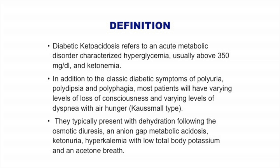DKA is an acute metabolic disorder. Usually when the glucose is above 350, it is accompanied by ketonemia. Without ketonemia and ketonuria you just have hyperglycemia alone. This particular patient definitely had ketonuria. These patients have symptoms and what is called air hunger, or Kussmaul breathing.